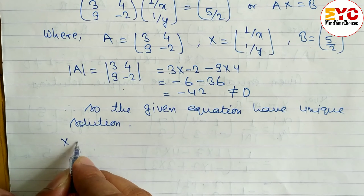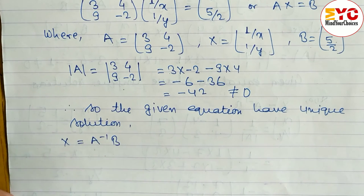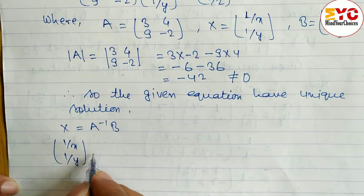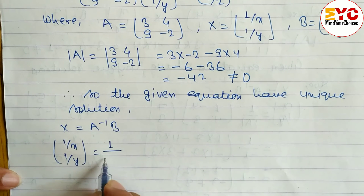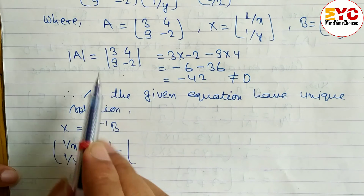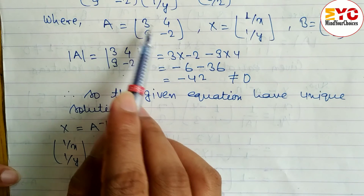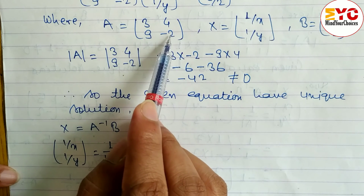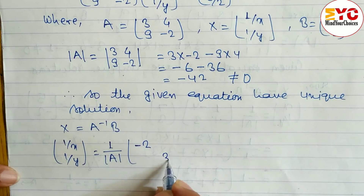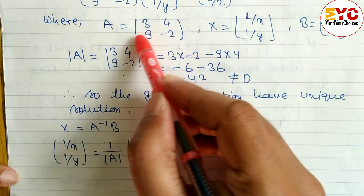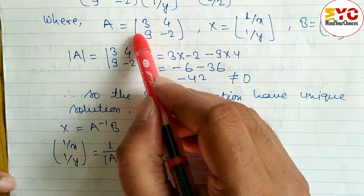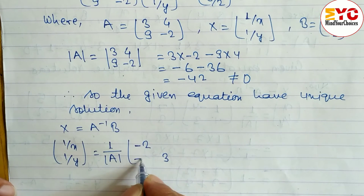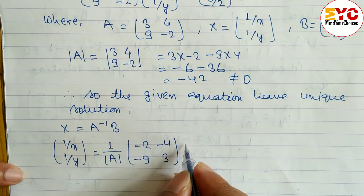We know the formula X = A⁻¹B. Here X is the column [1/x; 1/y], and A⁻¹ equals (1 / det(A)) times adj(A). To find the adjoint: on the main diagonal, interchange the elements — replace 3 with minus 2 and minus 2 with 3. On the non-diagonal, change the signs — 4 becomes minus 4 and 9 becomes minus 9. So adj(A) = [-2, -4; -9, 3].